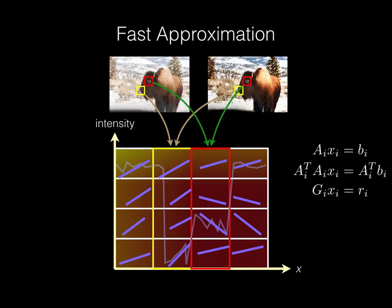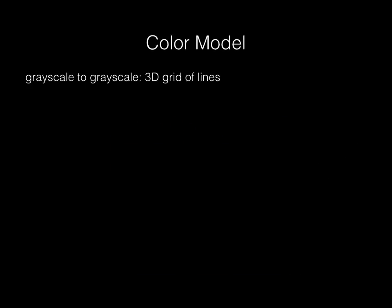Before showing you some results, one thing I haven't talked about is color. So far, everything I've talked about has been restricted to grayscale images. We modeled the transformation between input and output with 3D gridded lines. Concretely, we stored a 1x2 matrix for each xy intensity cell.